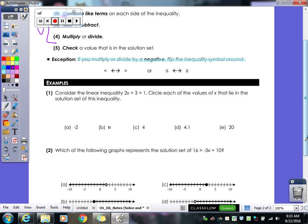So let's take a look at our first example. We have the linear inequality 2x plus 3 is greater than 1. They want us to circle each of the values of x that lie in the solution set. So we may have more than one answer. So just like we would for any equation, look first. Do we have anything to distribute? Nope. Do we have any like terms to combine? Nope. So now I'm working on getting my variable by itself. So I'm going to subtract my 3 first. So I get 2x is greater than negative 2. And then what's my last step? Divide by 2. So I get x is greater than negative 1.